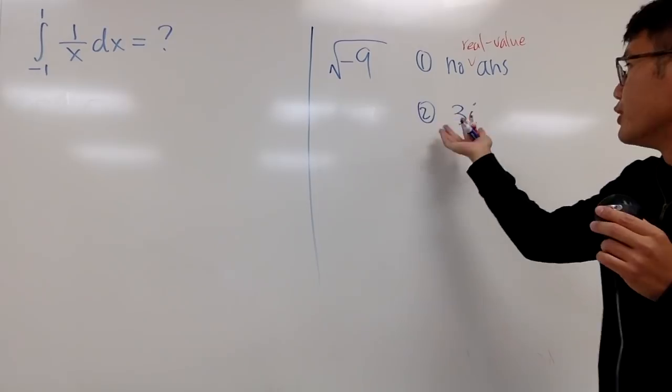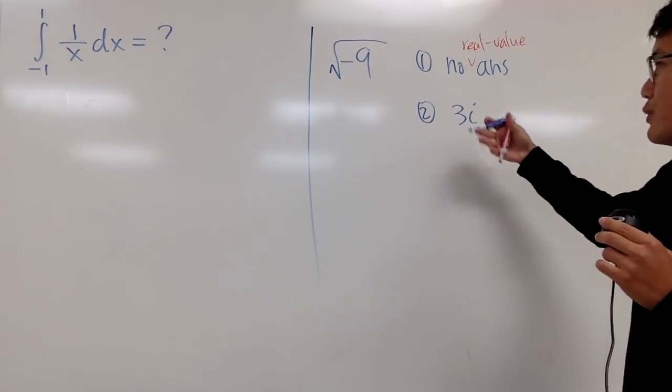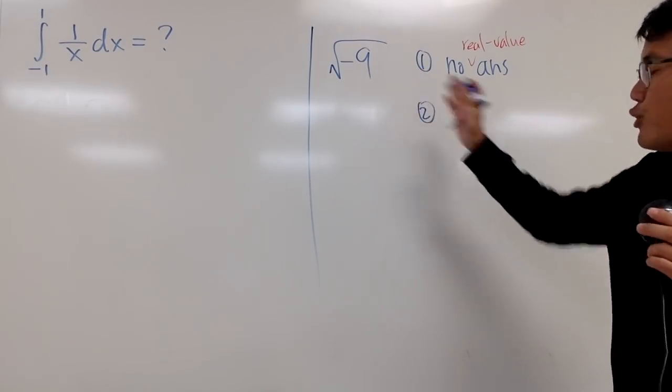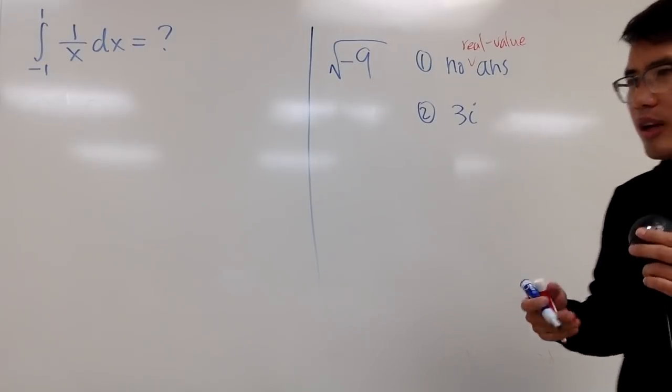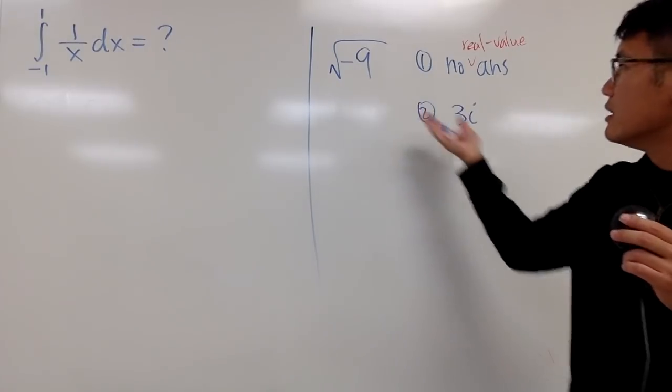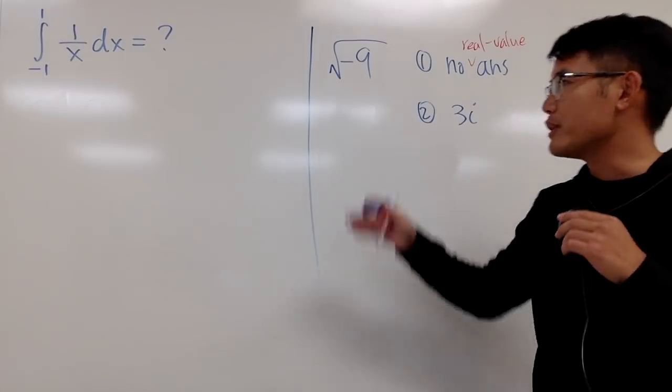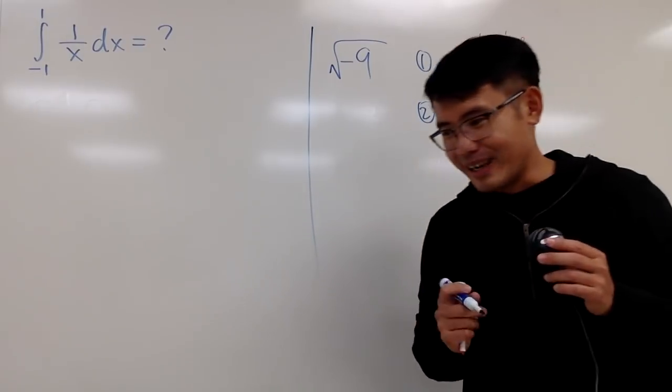But you shouldn't show them 3i, right? And of course, once you study the imaginary number, the complex number starting in algebra 2 or so, then you can say this is equal to 3i and then you continue. Especially in complex analysis, you use the i.